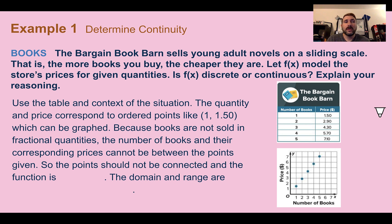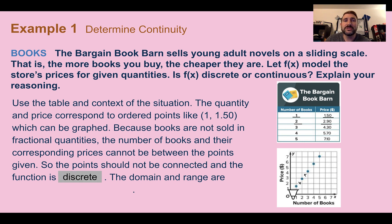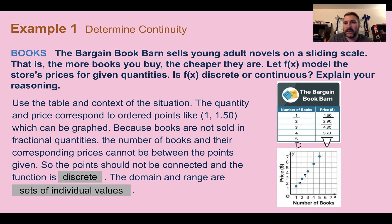Example one: determine continuity. The Bargain Book Barn sells young adult novels on a sliding scale — the more books you buy, the cheaper they are. Let f(x) model the store's prices for given quantities. Is f(x) discrete or continuous? The quantity and price correspond to ordered pairs like 1 and $1.50, or 2 and $2.90, and they can be graphed. But because books are not sold in fractional quantities — you cannot buy part of a book — the number of books and their prices cannot have between values. So we should not connect the dots, which means this is a discrete function. The domain and range are the set of individual values found in the table.